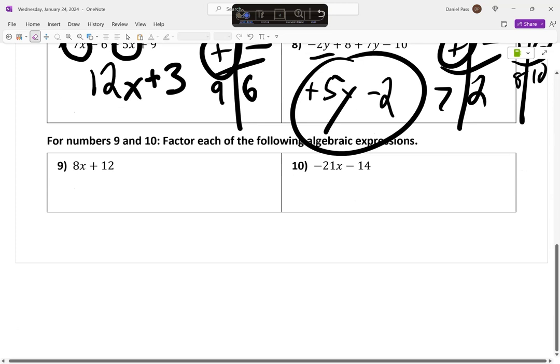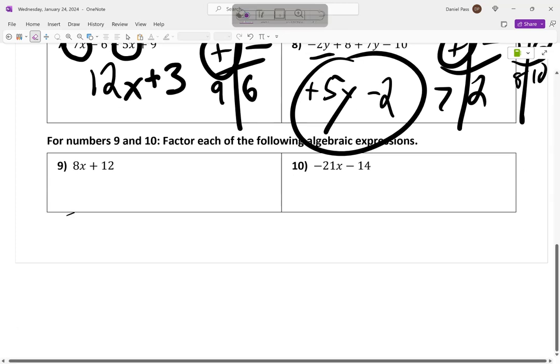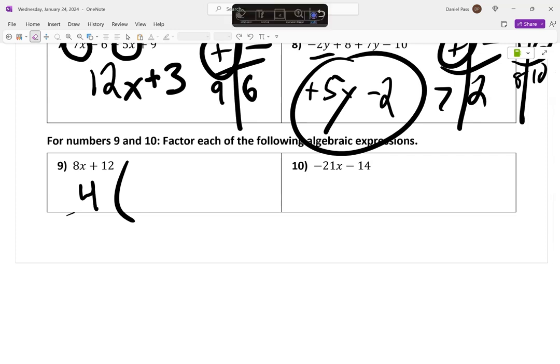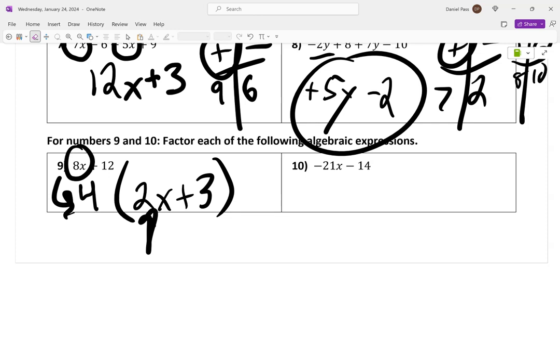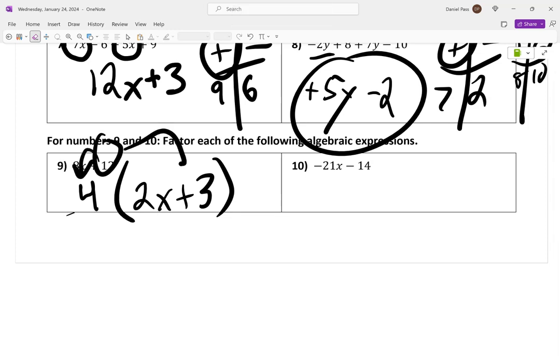All right, now let's see. Let me do nine and you can do ten, okay? Because we're just running out of time. So we divide by four. You don't want to divide by two because it's not the greatest common factor. Okay? Eight divided by four is what? Two. Okay? And twelve divided by four is what? Three. Okay? Now you can check your answer.